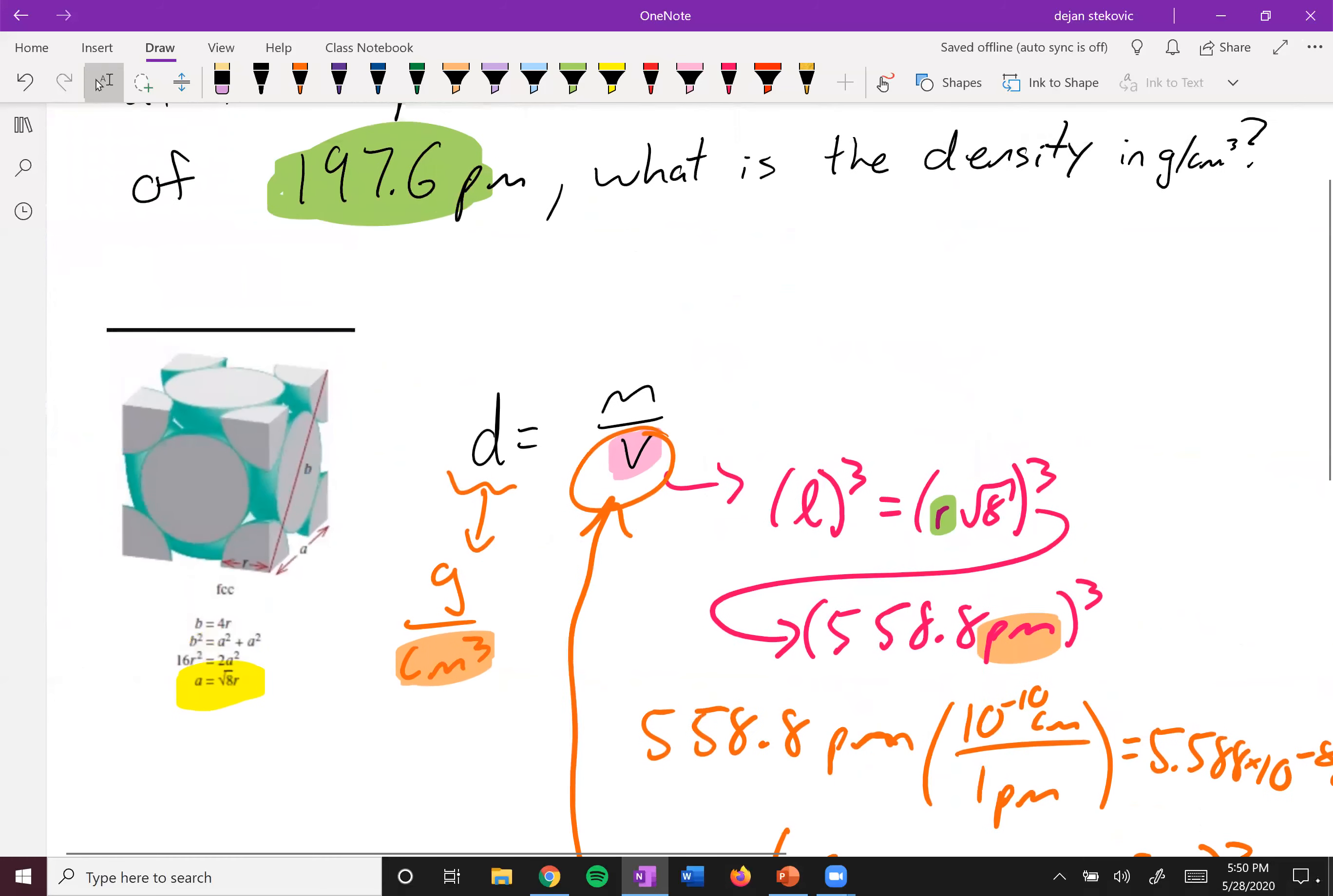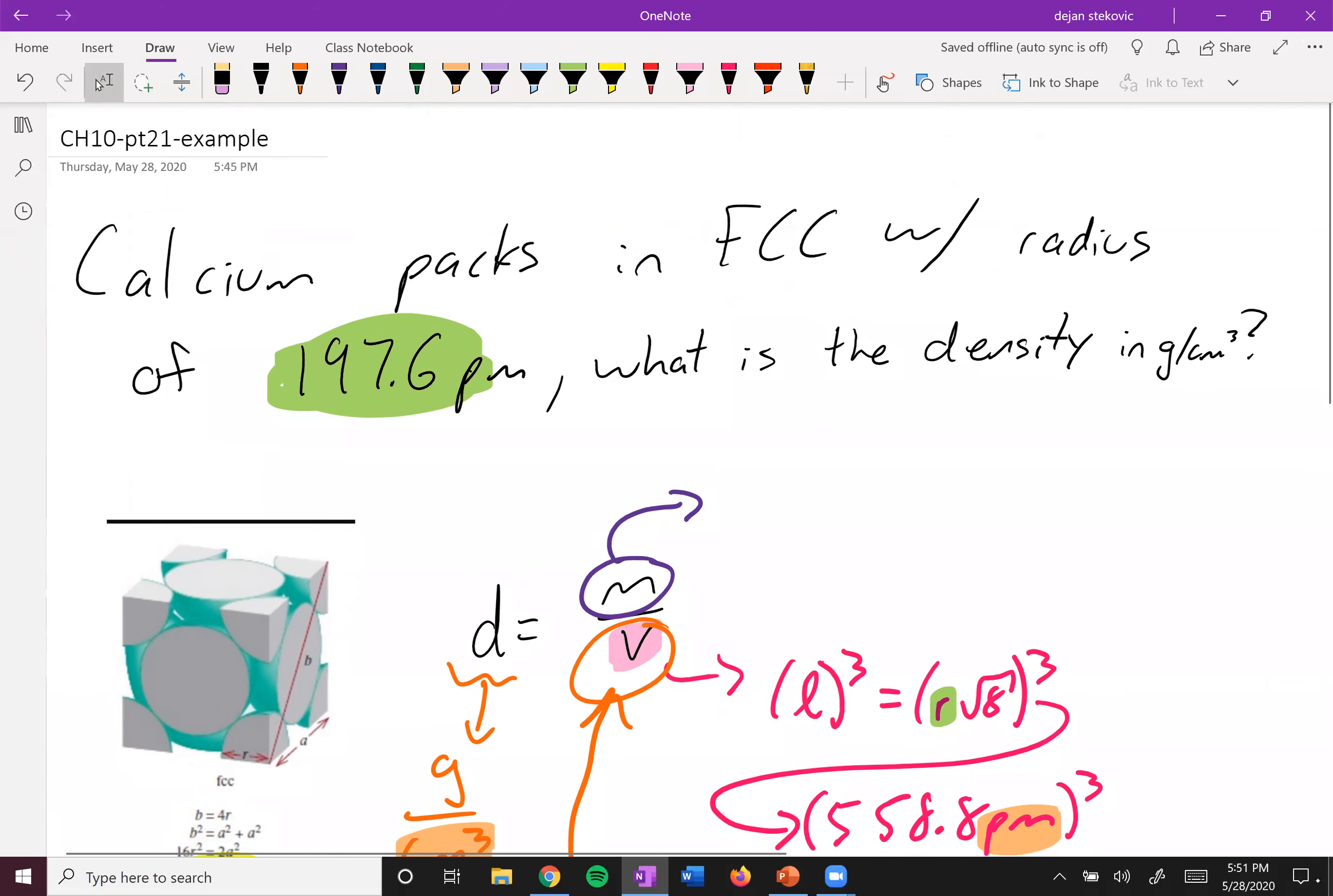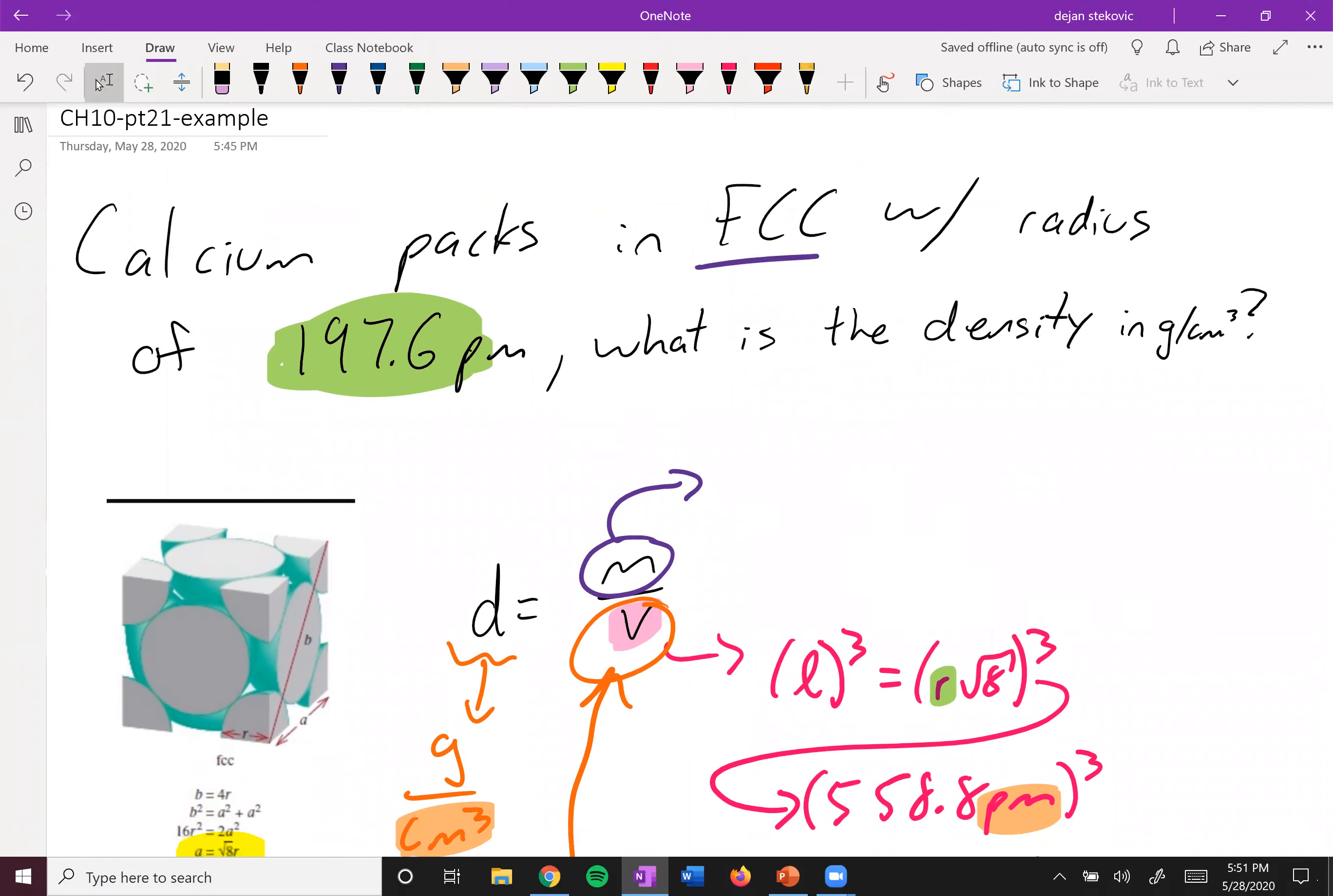So I would just suggest converting before you cube it. But if you're comfortable with other way, that's totally fine too. And then we think about what the mass is. So we know that we have a face-centered cubic, so we know we have four atoms per cell.